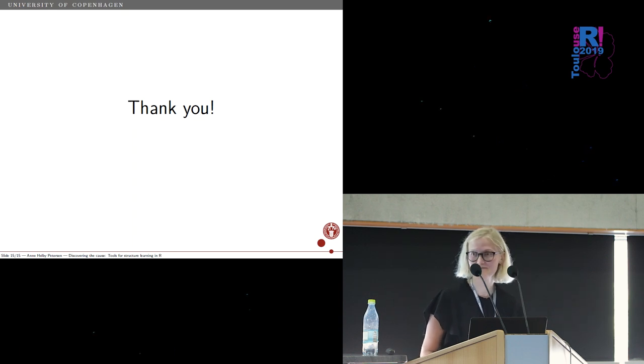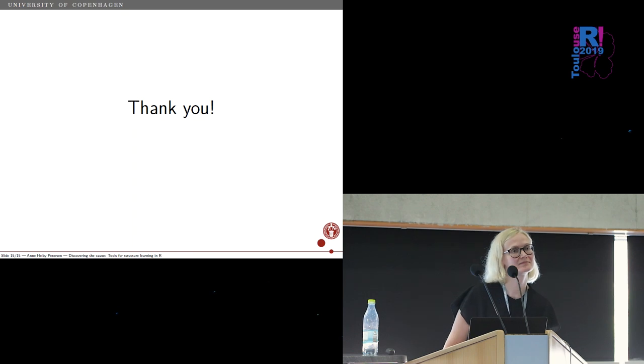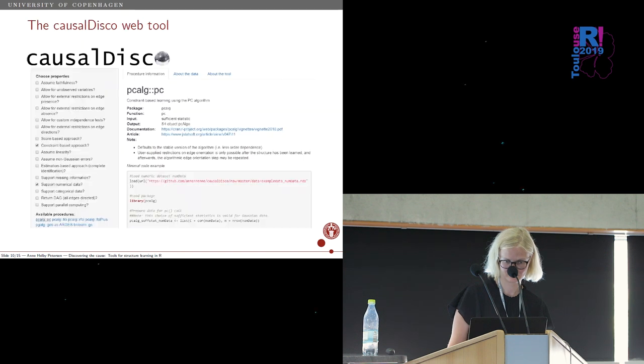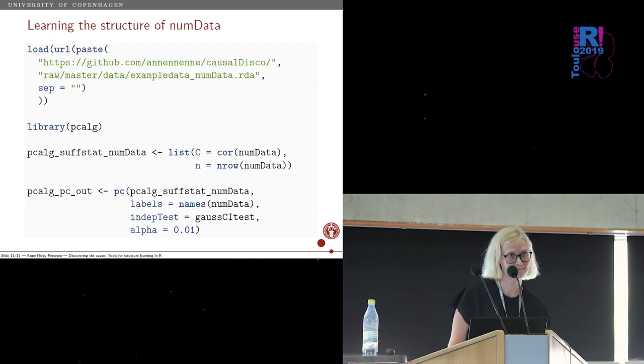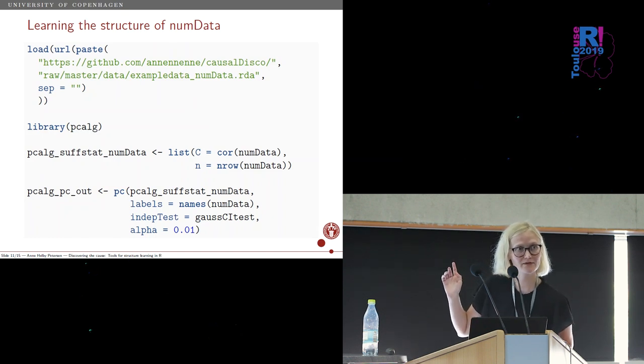I think there could be possibilities for collecting data sets also in a crowdsourcing project where we could have a collection of different data sets where we know the causal structure, maybe from agricultural experiments or something like that where there's no compliance issues. That'd be really cool. One more question over there. In the example you presented, what's behind the algorithm? Does it correct for all confounders or does it perform a mediation analysis in order to understand what is the cause of something? Is it this code example you're thinking of? Yeah. So this is the PC algorithm.